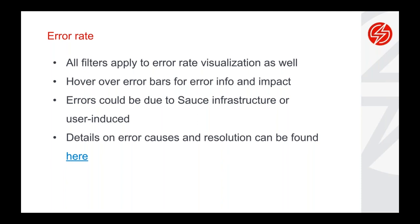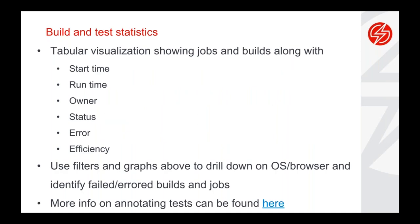Errors — any test that's not complete is classified as an error. We provide visuals on what your most common error types are and how rampantly they're impacting your tests. Details and error messages and what they mean can also be found within the analytics dashboard. The build and test statistics table towards the bottom of the page is the metric that will help users move from a high-level 10,000-feet view into the actual test itself that you want to troubleshoot. You can watch your test video, look at the logs, and troubleshoot faster.